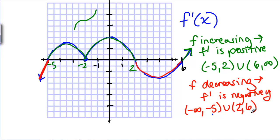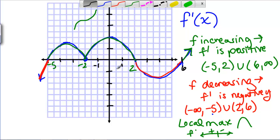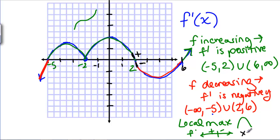Now we're also supposed to determine local maximums and local minimums. A local max occurs when your function is going from increasing to decreasing — when F-prime is going from positive to negative Y-values. Looking at the graph, that's happening at x equals 2.